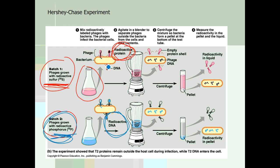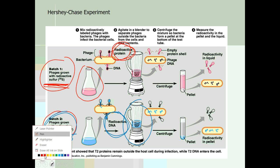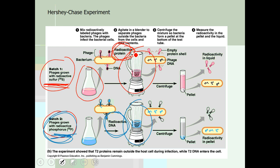They put the mixture into blenders — one for each batch. The purpose of the blender was to agitate the cells so that the parts of the virus that did not enter the host cell would shake loose. The only part of the virus that doesn't get shaken off is the part that's actually inside the host cell — which, as you can see in the picture, is the DNA part. They wanted to figure out which part of the virus was located inside the bacteria, because that would be the genetic molecule.